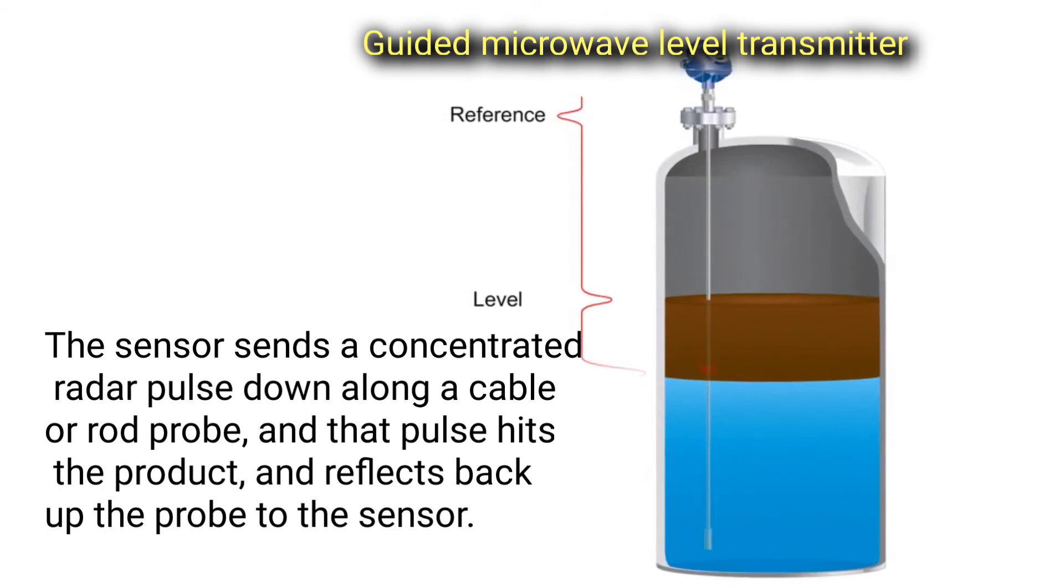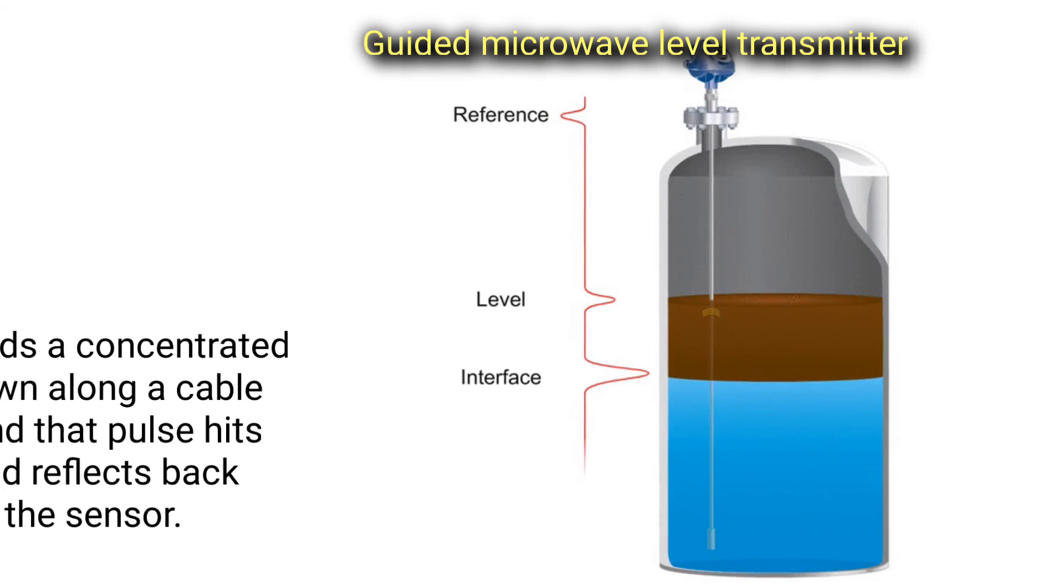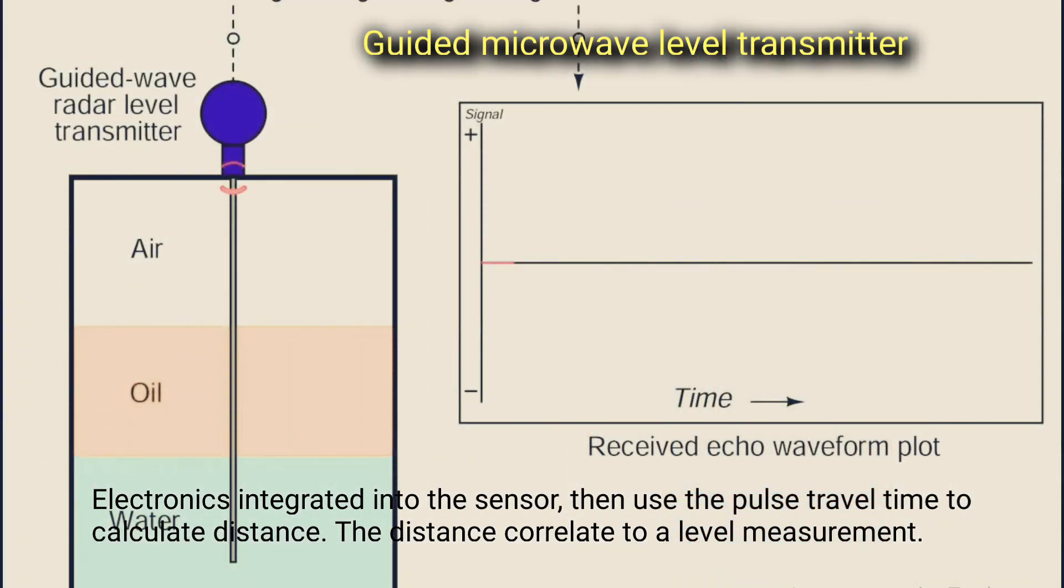The sensor sends a concentrated radar pulse down along a cable or rod probe. That pulse hits the product and reflects back up the probe to the sensor. Electronics integrated into the sensor then use the pulse travel time to calculate distance. The distance correlates to a level measurement.